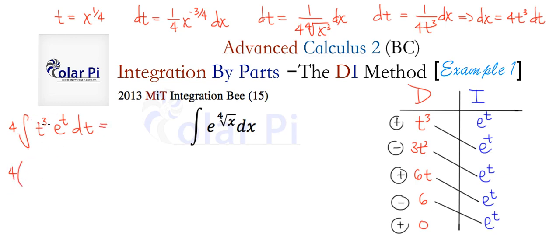This here is equal to four times the answer to this is positive T cubed times E to the T, so that's T cubed E to the T. And then negative three T squared times E to the T, so minus three T squared E to the T. And then plus six T E to the T, plus six T E to the T. And then minus six E to the T, minus six E to the T. And now you can close the parentheses, and then plus some constant C.